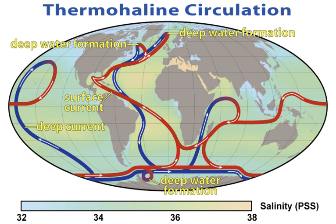The first acoustic measurement of sea depth was made in 1914. Between 1925 and 1927, the Meteor expedition gathered 70,000 ocean depth measurements using an echo sounder, surveying the mid-Atlantic ridge. Sverdrup, Johnson and Fleming published The Oceans in 1942, which was a major landmark. The Sea in three volumes, covering physical oceanography, seawater and geology, edited by M.N. Hill was published in 1962, while Rhodes Fairbridge's Encyclopedia of Oceanography was published in 1966.